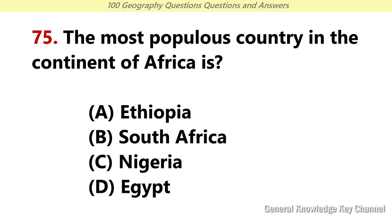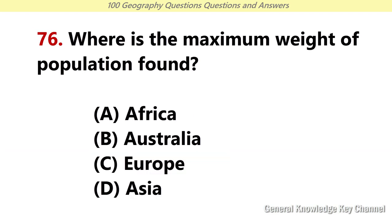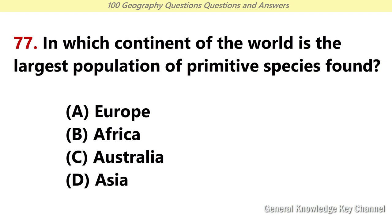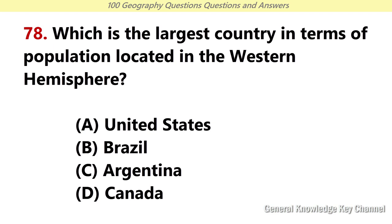The most populous country in the continent of Africa is? Answer C: Nigeria. Where is the maximum weight of population found? Answer D: Asia. In which continent of the world is the largest population of primitive species found? Answer B: Africa. Which is the largest country in terms of population located in the western hemisphere? Answer A: United States.